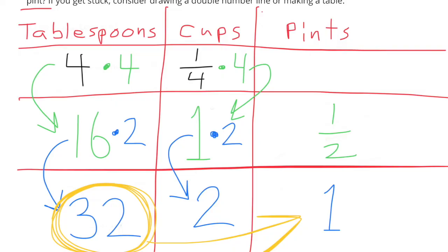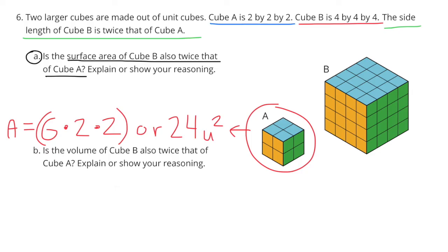One cup times two gets me to two cups, and 16 times two gets me to 32 tablespoons. Two cups also equals one pint. So in one pint there are 32 tablespoons.